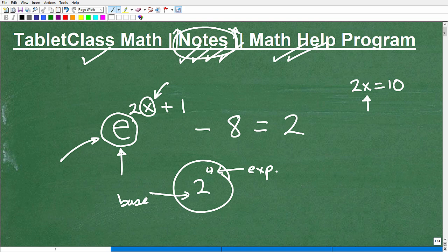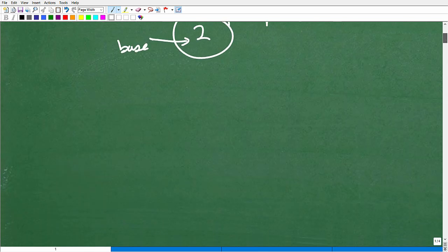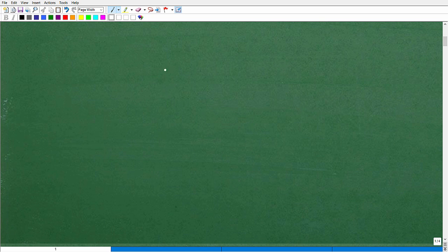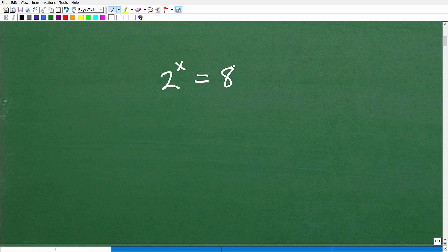Okay. So now let's get to this problem. Now, before I get to the actual problem, let's just do an easier version of the problem. So let's say I have 2^x equals 8. So 2^x equals 8.